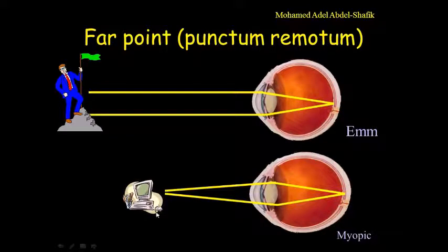So the near point here is closer than infinity. The more the myopia, the closer the near point. So the definition of far point or punctum remotum: it is the conjugate point with the retina when accommodation is relaxed.